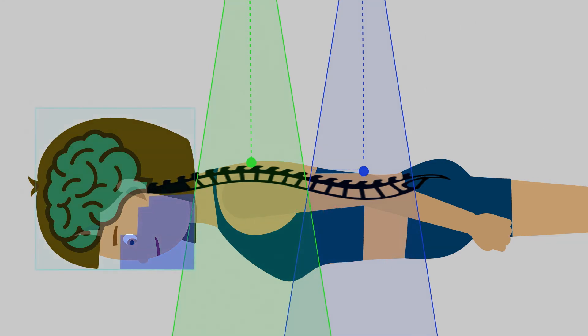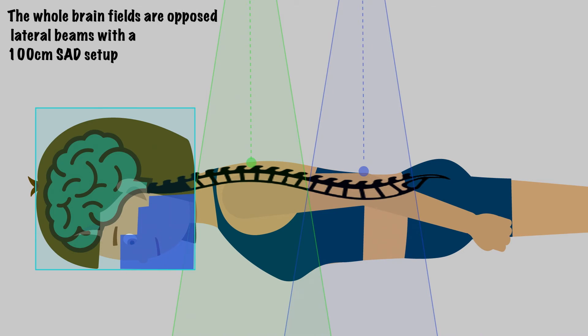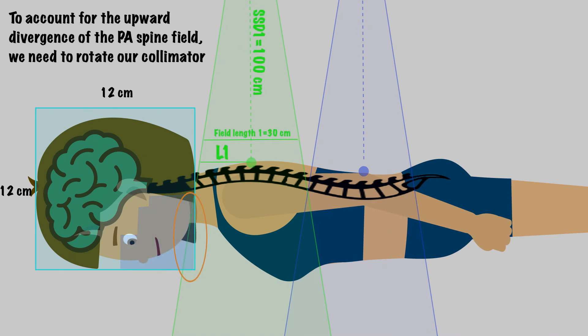The cranial portion of this treatment is delivered with two opposed-lateral whole brain fields, measuring 12 by 12 cm, and treated with an SAD technique. We will need to account for the upward divergence of the superior PA spine field and the downward divergence of the lateral whole brain field. Here is where our collimator and couch rotations are used. To account for the upward divergence of the PA spine field, we need to rotate our collimator.